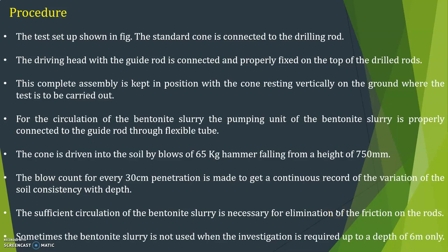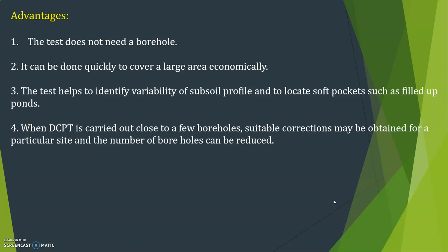The blow count for every 30 cm penetration is recorded to get a continuous record of variation of soil consistency with depth. Sufficient circulation of bentonite slurry is necessary for elimination of friction on the rods. Sometimes the bentonite slurry is not used when investigation is required up to a depth of 6 m only. These are the steps to carry out a dynamic cone penetration test.